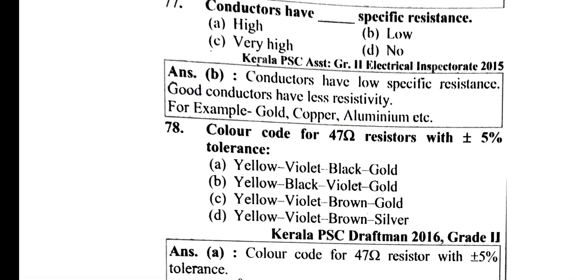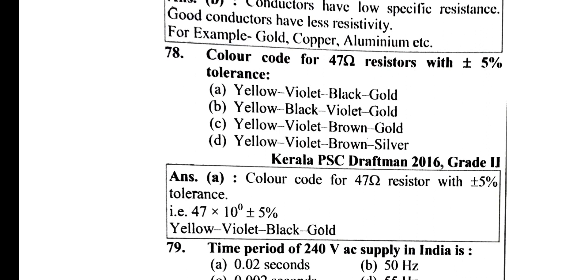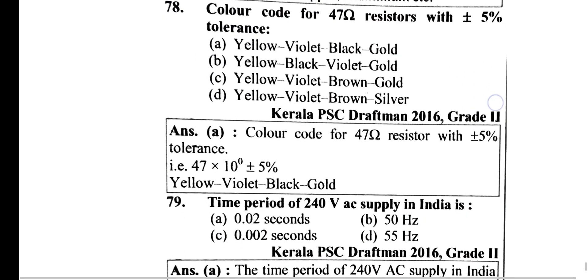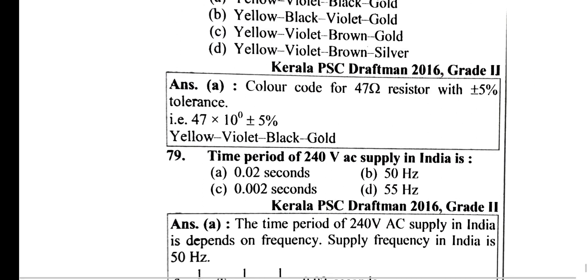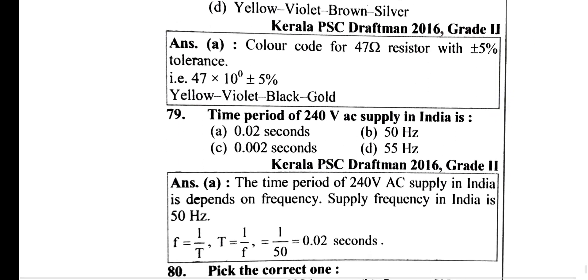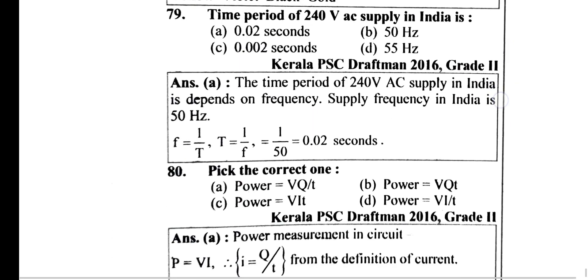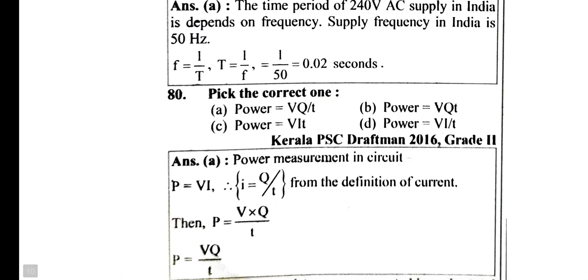Color code of 47 Ohm resistor with plus or minus 5% tolerance — option A: yellow, violet, black, gold. Time period of 240 volt AC supply in India — option A: 0.02 seconds, that is 1 by 50. Power measuring unit: Q equals V into Q by t, which equals V into I. Option A.